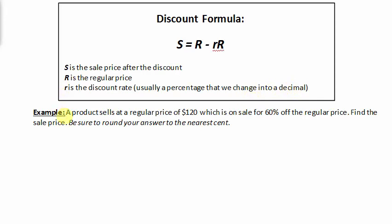Looking at the example, a product sells at a regular price of $120, which is on sale for 60% off the regular price. Find the sale price and round your answer to the nearest cent.